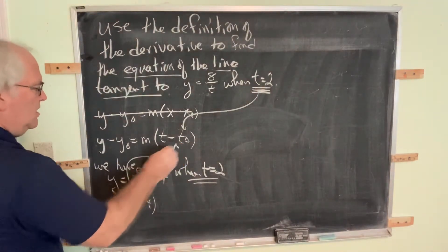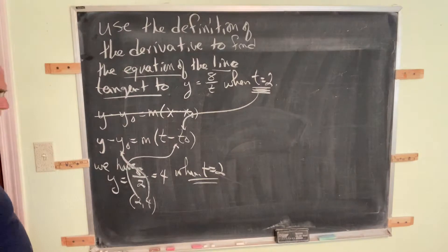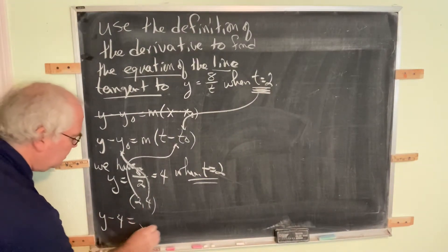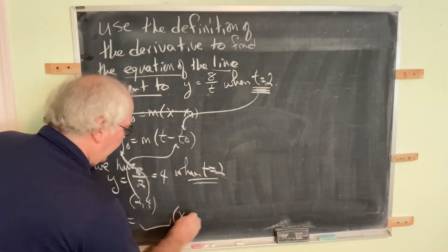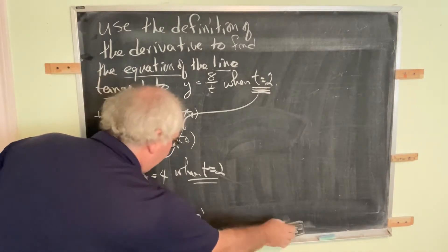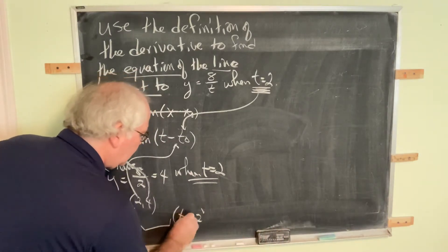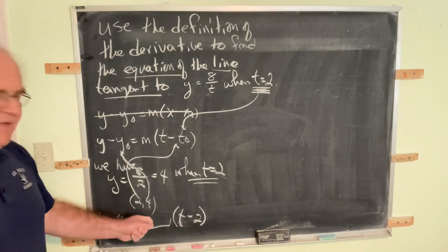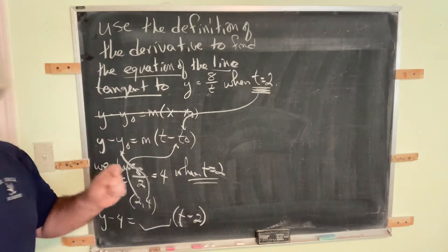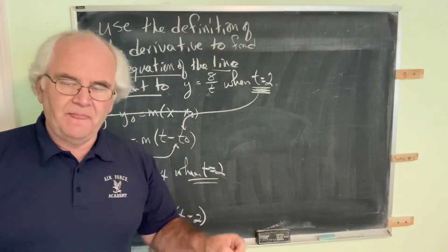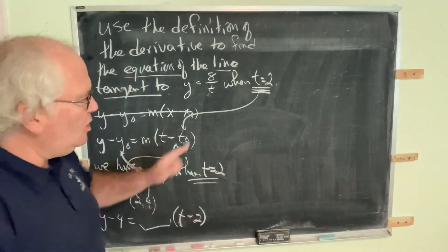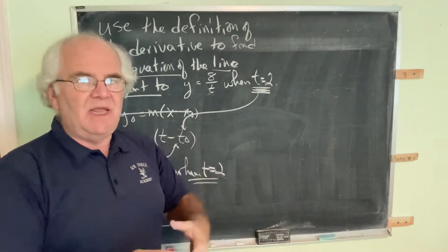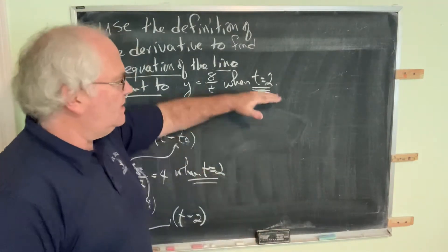The t-coordinate goes in for t₀ and the y-coordinate for y₀, so we have y minus 4 equals (unknown slope) times (t minus 2). Our task now is to find the slope of the tangent line, which is the derivative evaluated when t equals 2. We need to find the derivative as a function of t and then evaluate it at t equals 2.